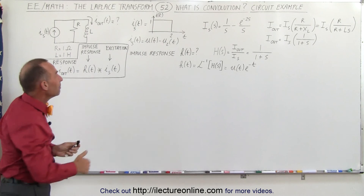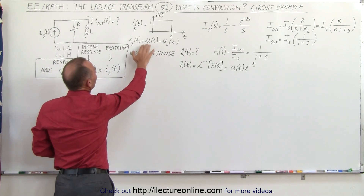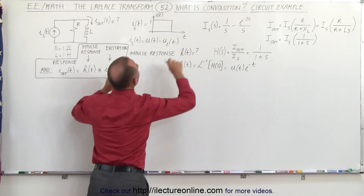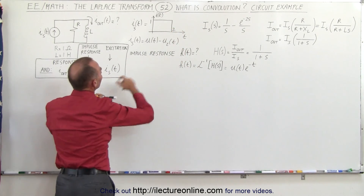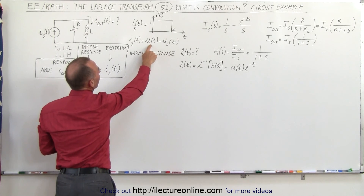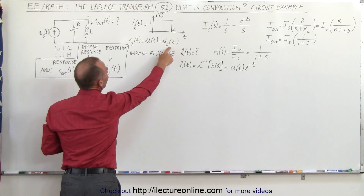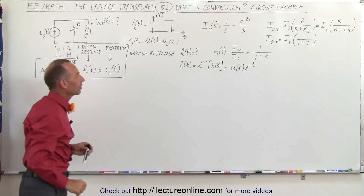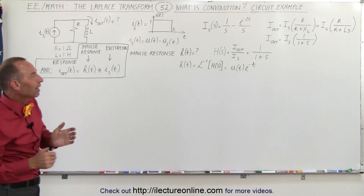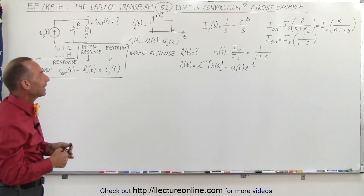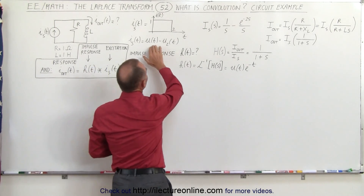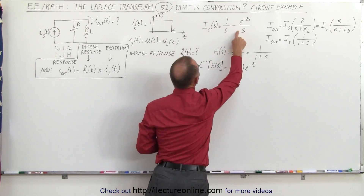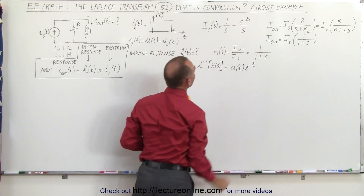We can represent the input — the excitation of the circuit — using two unit step functions. This 2 here is part of the graph, so we have the unit step function starting at t=0, minus the unit step function starting at t=2, giving that 2-second pulse. Converting to the frequency domain via the Laplace transform, we get 1/s minus (1/s)·e^(-2s), where the e^(-2s) accounts for the 2-second delay.